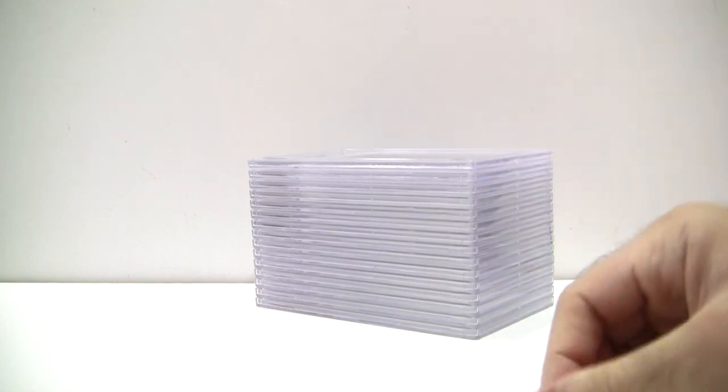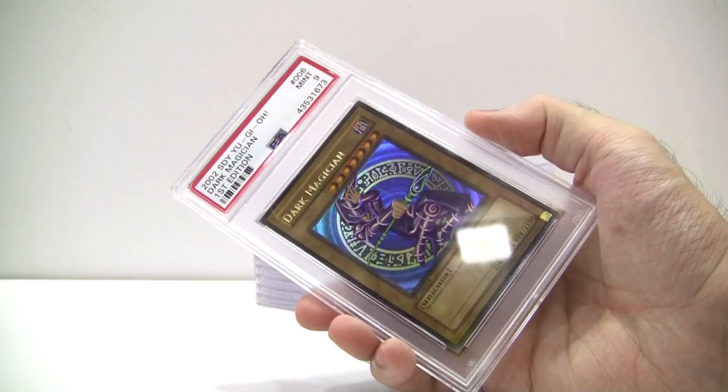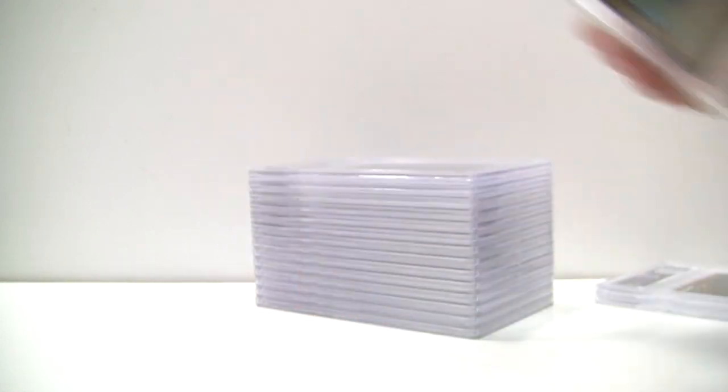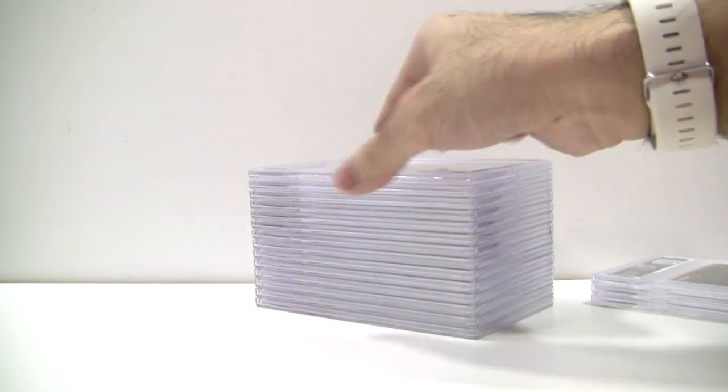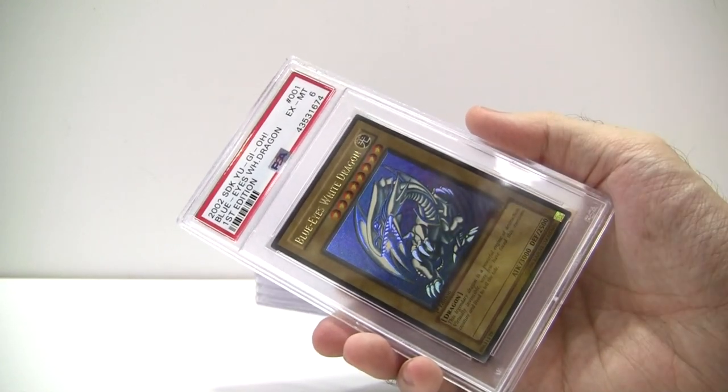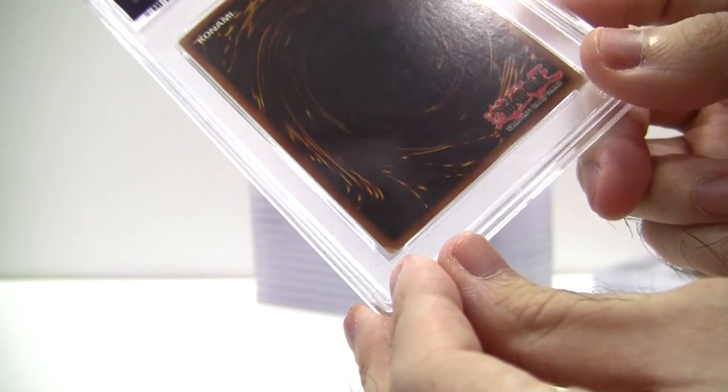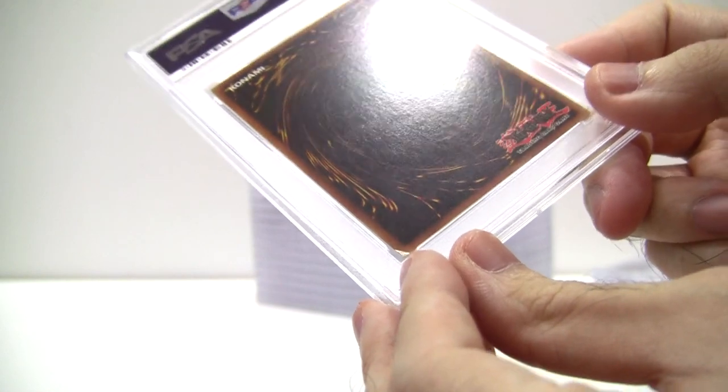Next up, from the very first starter decks, we have the first edition SDY-006 Dark Magician, and the SDK-001 Blue Eyes White Dragon. Slightly annoyed that the Blue Eyes got a 6, but it's kind of understandable because this one does have a little bit of a dented corner. Unfortunate, but what are you going to do?